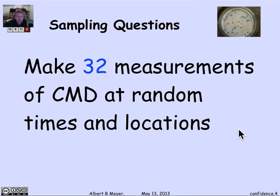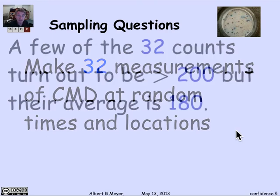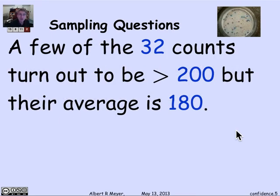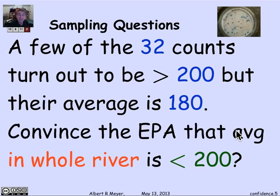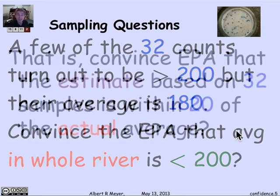We're never going to be certain, but what we're going to do is take 32 measurements at random times and locations around the river and collect these 32 measurements of CMD. It turns out that although a few of them are over 200, the average is well under 200 — the average of the 32 samples that we've taken is 180. Our task now is to convince the Environmental Protection Agency that, on the basis of our data, the average in the whole river is really less than 200, even though in a couple of places it was over 100. On average it was 180.